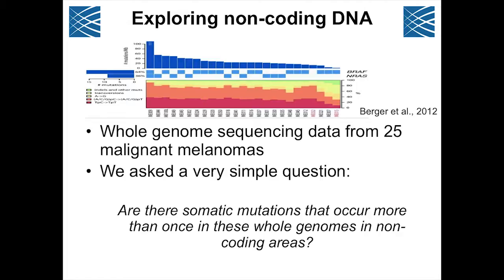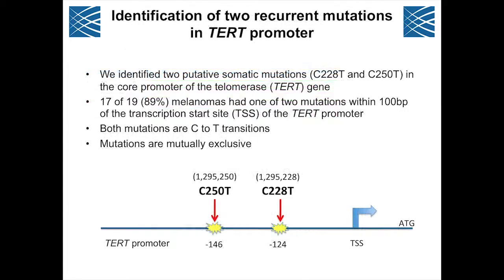That question was: are there somatic mutations that occur more than once in these whole genomes in non-coding areas? Much to our surprise — so much so that we actually didn't believe the data at first — we found that in 17 of 19 of these melanomas with coverage at the TERT promoter, there were two specific mutations within 100 base pairs of the transcription start site.